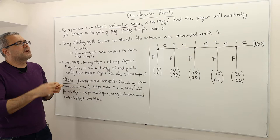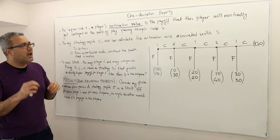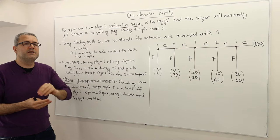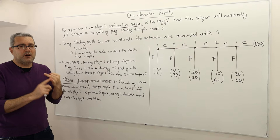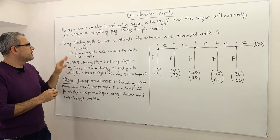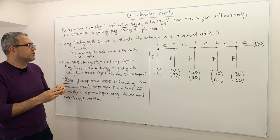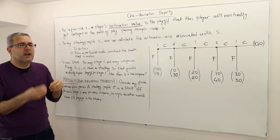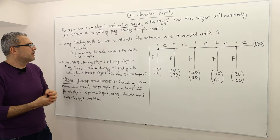For any strategy profile, we can calculate the continuation value associated with that strategy profile. So continuation value depends on both the strategy profile and the particular decision node we are picking. To calculate the continuation value for a given strategy profile, first pick a particular decision node, then construct the path that the strategy profile S implies, and the continuation value is going to be that resulting payoff.